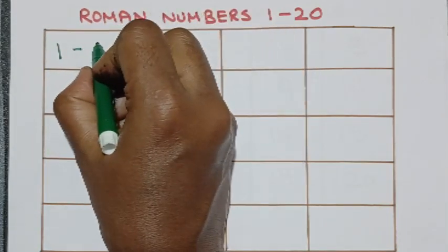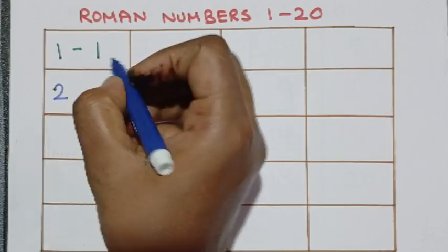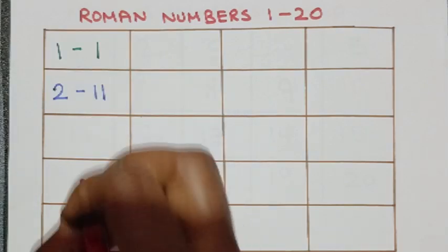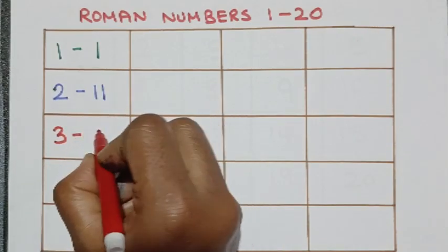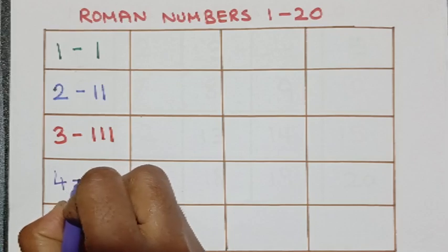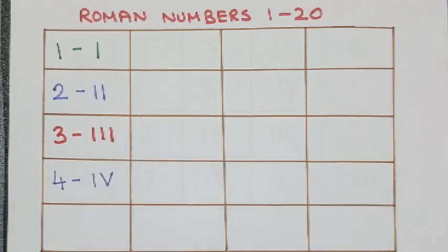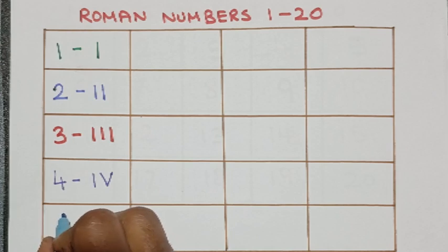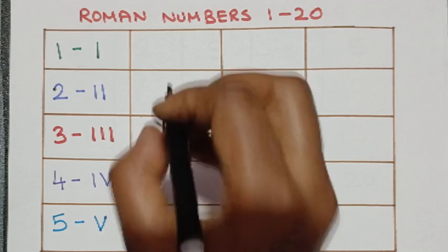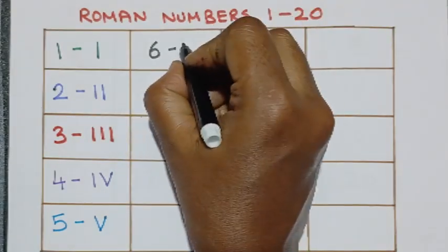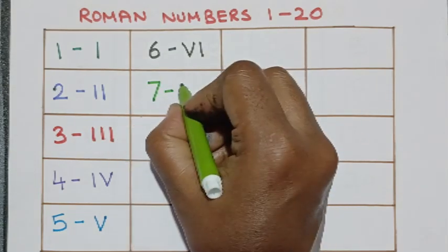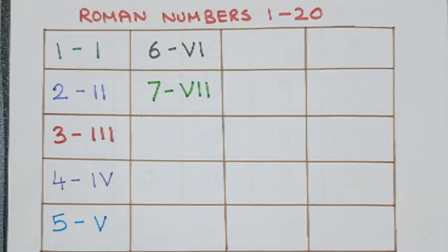1 Roman 1, 2 Roman 2, then comes 3 Roman 3, then comes 4 Roman 4, then comes 5 Roman 5, then comes 6 this is Roman 6, then comes 7 Roman 7.